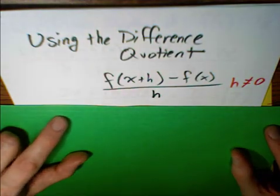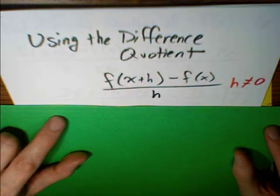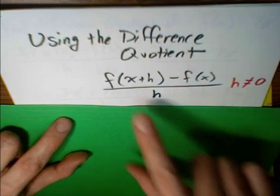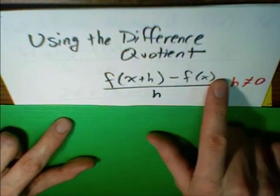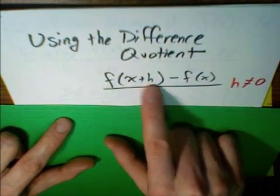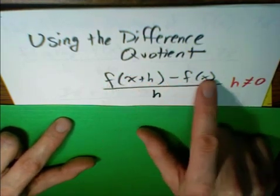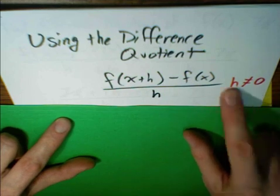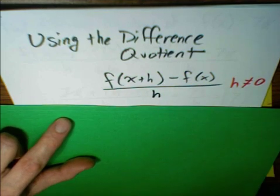Hello. In this video, we're going to use the difference quotient with a few harder functions. Remember, the difference quotient is f of the quantity x plus h minus f of x, all over h, and the condition is that h cannot equal 0.